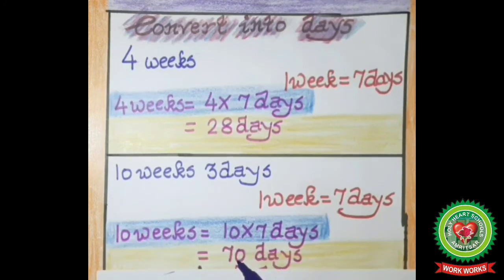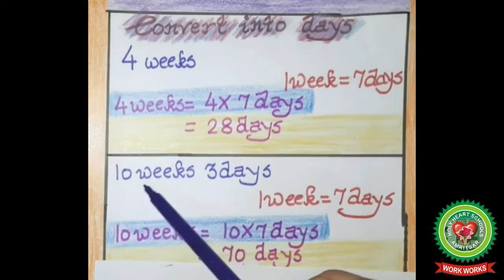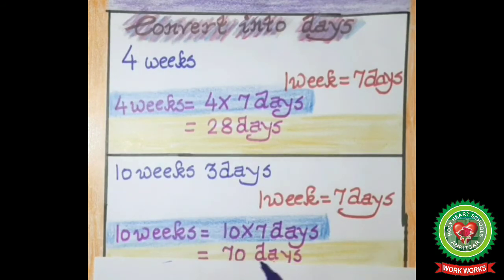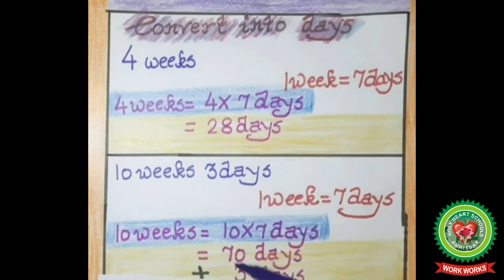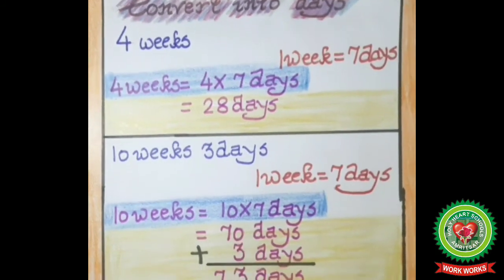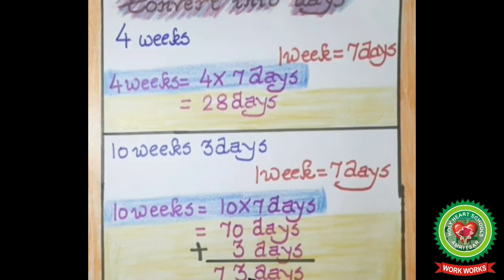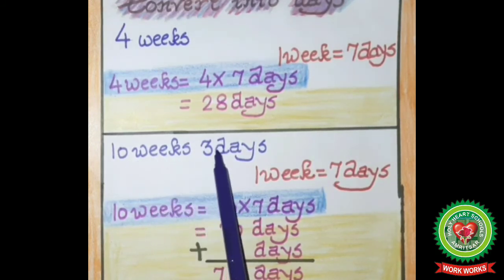This means in ten weeks there are seventy days. Now three days are left. We will add these three days to seventy days. Let's do the addition: 70 plus 3 is 73. That means the answer is seventy-three days. So in ten weeks three days, there are seventy-three days.